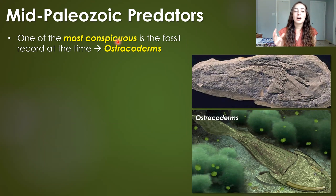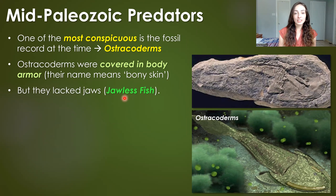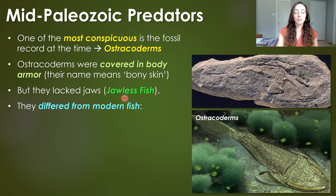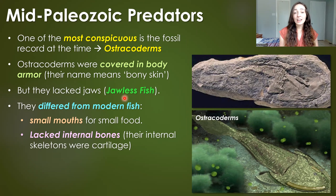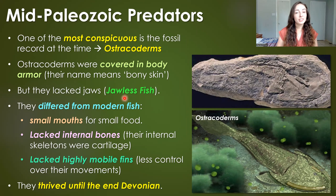One of the more conspicuous groups of fish preserved in the fossil record of this time is the ostracoderms. Ostracoderms were covered in body armor — their name literally means 'bony skin' — but they actually lacked jaws; these were jawless fish. They differ greatly from modern fish in that they had small mouths for very small items of food, lacked internal bones with cartilage instead, and lacked highly mobile fins. They were probably mostly deposit feeders at the sea floor. They thrived until the end of the Devonian.